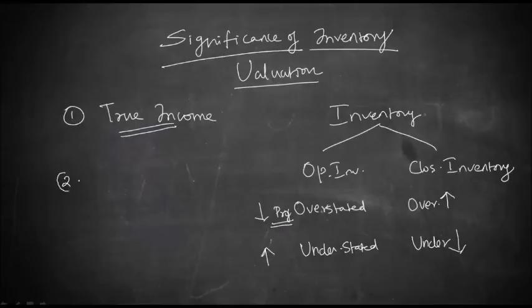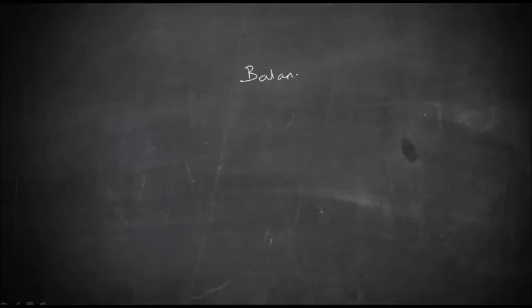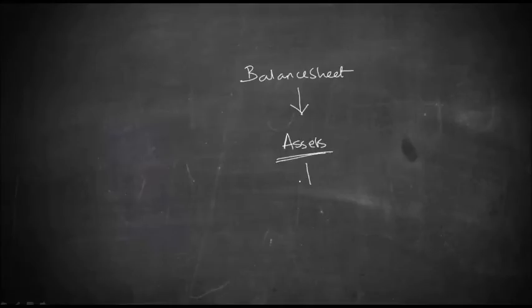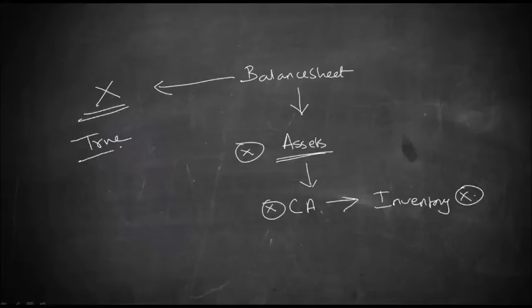The second reason is to know the true financial position of the business entity, for which you should know the correct inventory value. The true financial position is derived from the balance sheet, and the balance sheet gives a true financial position only when all assets are captured correctly. Assets include current assets, and current assets include inventory. So if your inventory is not valued correctly, your total assets are not correct, and your balance sheet will not give you the true financial position.